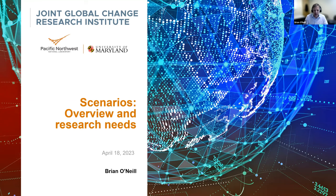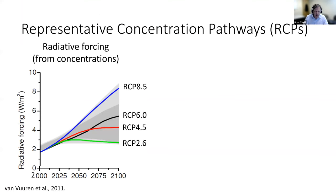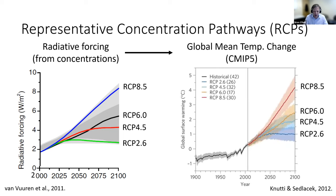Let's start with the RCPs. The RCPs are a set of what were at the time pre-existing concentration pathways drawn from the literature around the year 2010. There are four of them, and they were intended to span the range of scenarios in the literature at that time. Those concentration pathways were used in the CMIP-5 modeling exercise to produce Earth system model simulations. I'm showing here the global average temperature outcomes, but the full set of results were then available for use in studies of impacts, adaptation, or mitigation.